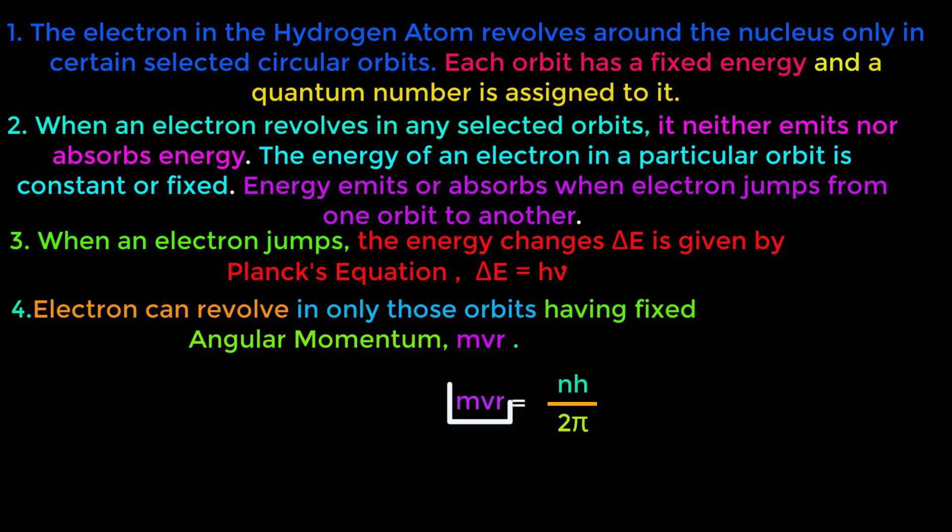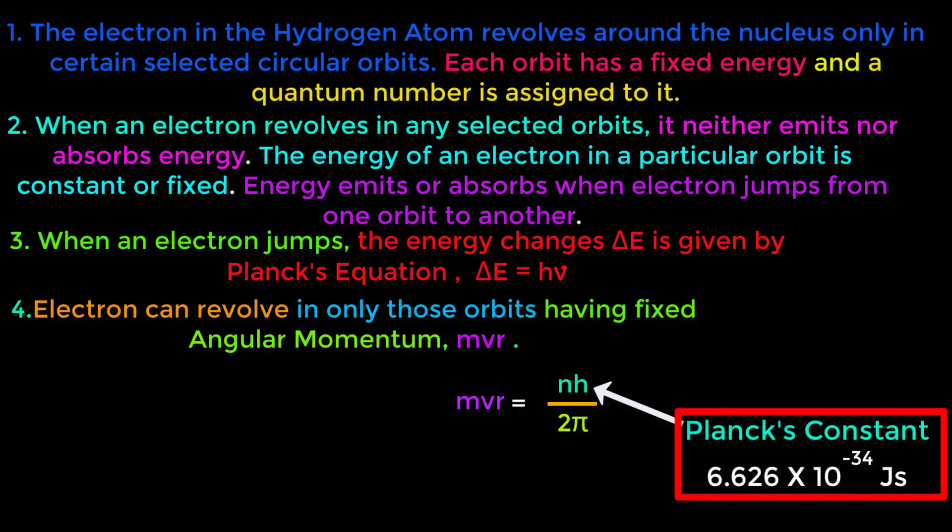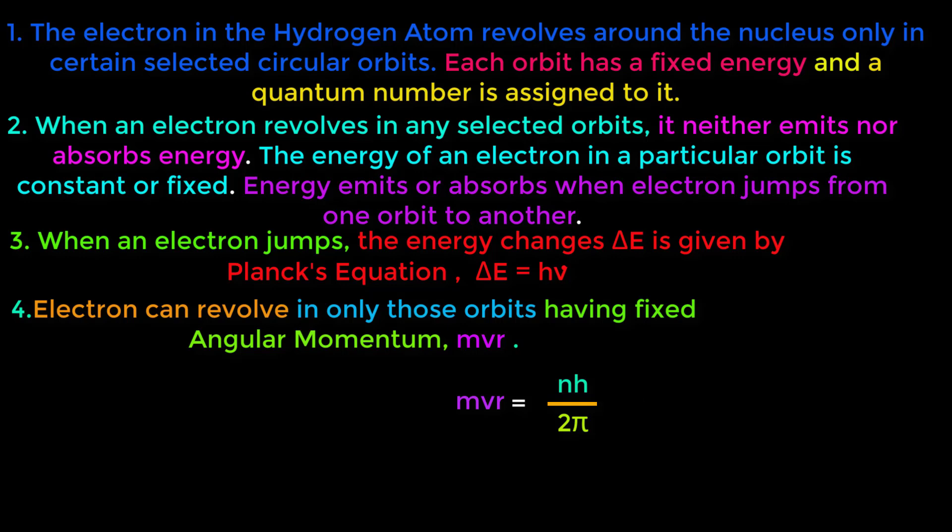Again MVR depends upon this h over 2π. Here h is Planck's constant. The value of Planck's constant is 6.626 times 10 to the power minus 34 joule second and the value of π is 3.1416. That means this h and this π is constant. Therefore, we can say that angular momentum is quantized. Thanks a lot for watching this tutorial.